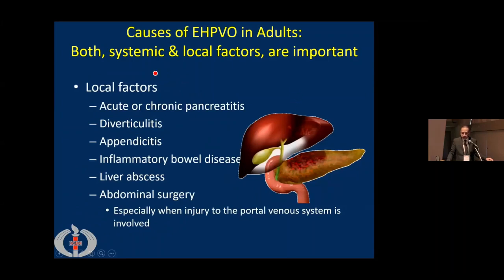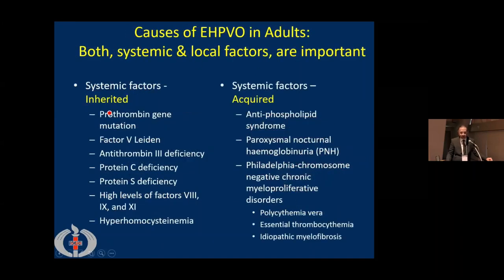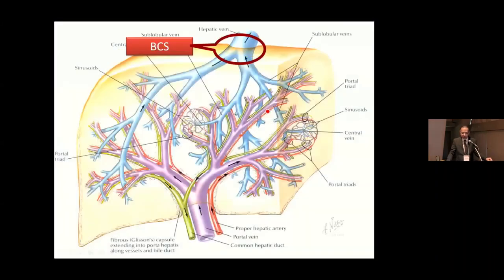In adults, EHPVO can be caused by both local and systemic factors. Local factors include inflammation of nearby organs — acute and chronic pancreatitis, diverticulitis, appendicitis — and many patients with inflammatory bowel disease develop this syndrome, as can abdominal surgery complicated by sepsis. Systemic causes can be inherited, such as increased thrombophilia factors, or acquired, such as antiphospholipid antibody syndrome.